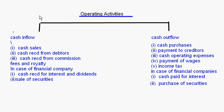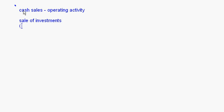These are the items which come under all three activities — financing activity, investing activity, and operating activity. Whenever we take up any question on cash flow statements, we first need to see what items come under which activity, separate them, and then solve the question. For example, cash sales is an operating activity.